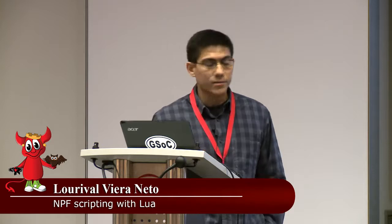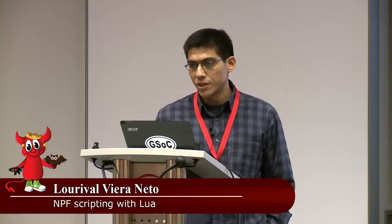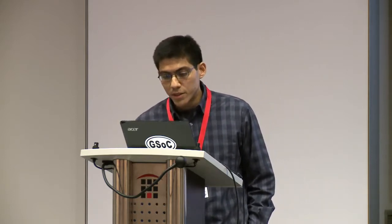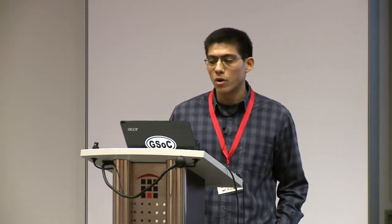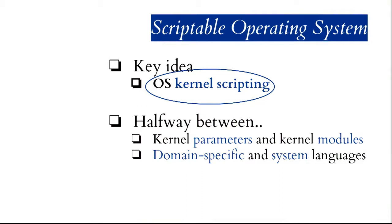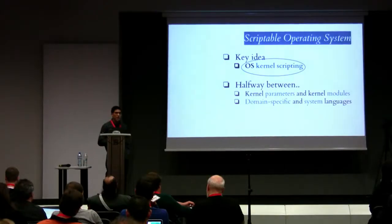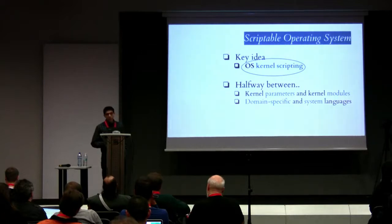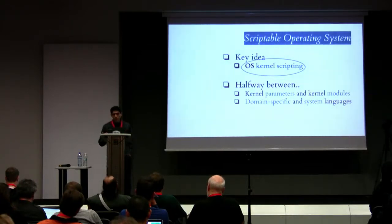We can also prototype new features using a scripting language. We could have the operating system scriptable both in user space and in its kernel. But the key idea here is to script the operating system kernel, which we call kernel scripting. It is the halfway between using just kernel parameters and actual kernel modules, and also the halfway between using a domain-specific language and a system programming language.